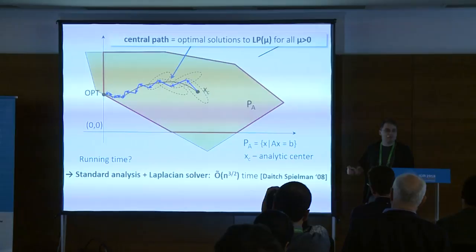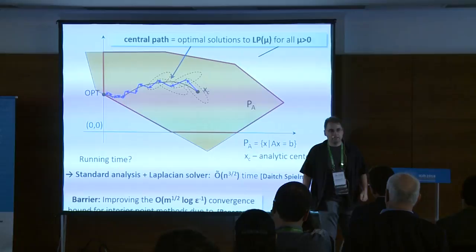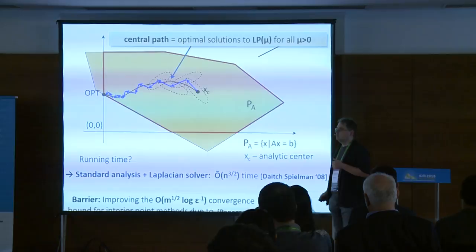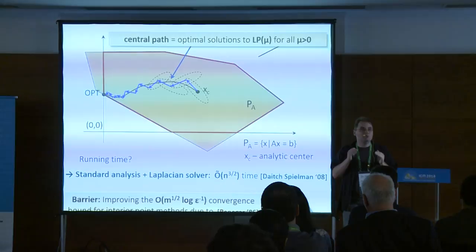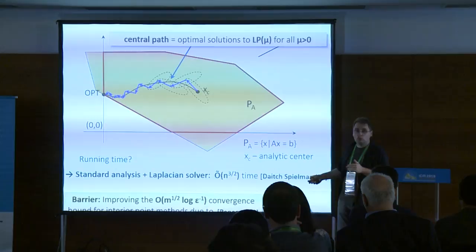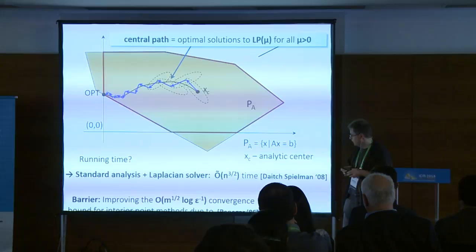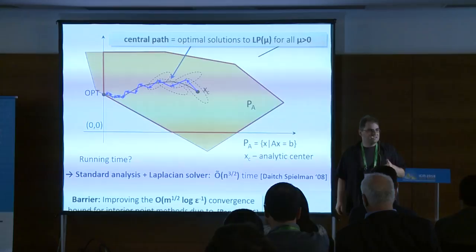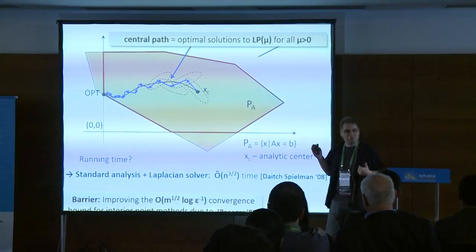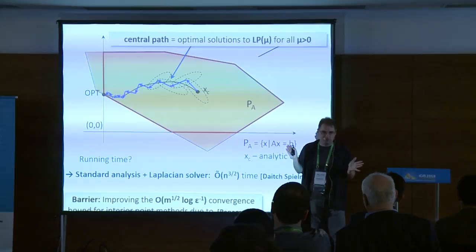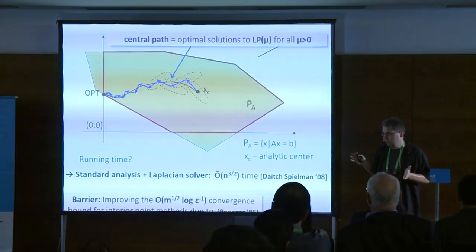How can you go beyond n-to-the-three-halves? The problem is quite difficult, because the reason we have this square root of n overhead is that square root of n is roughly how many iterations we need for this dynamical system — this discretization of the central path — to converge to a close-to-optimal solution. Trying to understand if this is the best possible convergence is a very central problem in mathematical programming. In particular, the square root of n bound is due to Renegar, proved in the 80s. Since then, people tried to improve it and could not. This is frustrating because in practice these dynamical systems usually converge after 10 or 30 iterations, but theoretically we cannot prove anything better than square root of n.